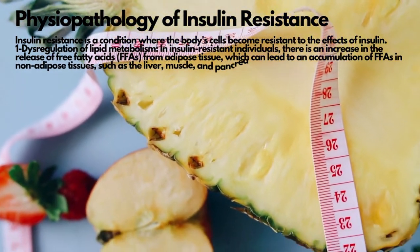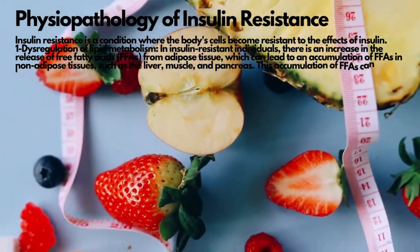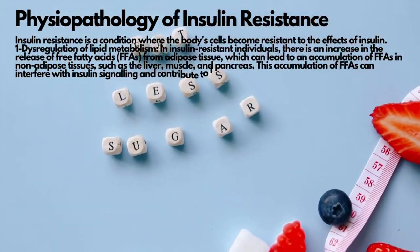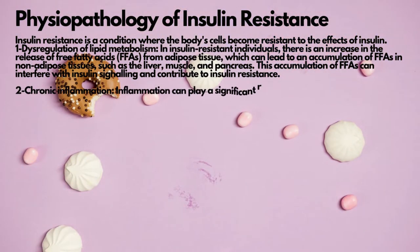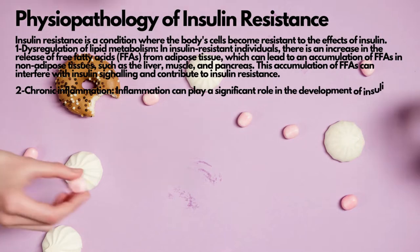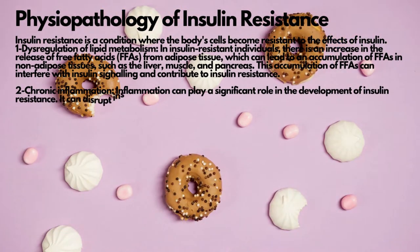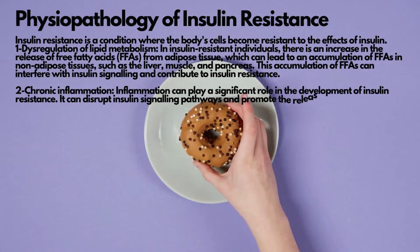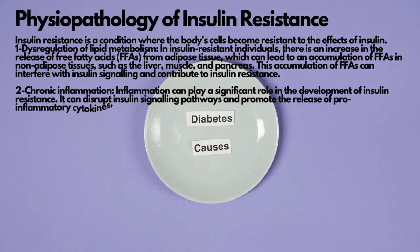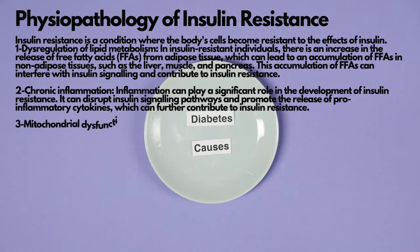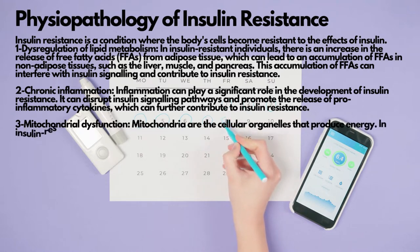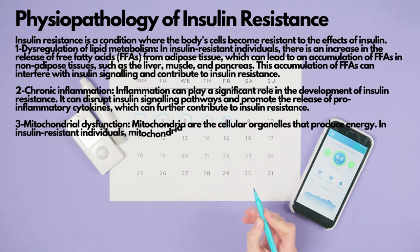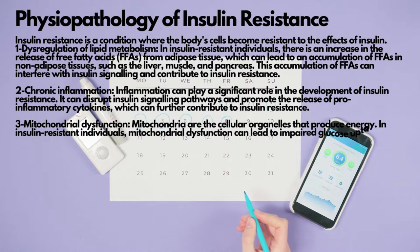The physiopathology of insulin resistance involves several complex mechanisms, including: 1) Dysregulation of Lipid Metabolism. In insulin-resistant individuals, there is an increase in the release of free fatty acids (FFAs) from adipose tissue, which can lead to an accumulation of FFAs in non-adipose tissues such as the liver, muscle, and pancreas. This accumulation of FFAs can interfere with insulin signaling and contribute to insulin resistance.